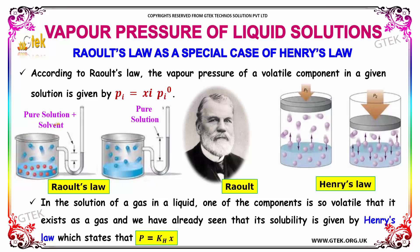You are able to see the pure solution with the solvent. In the solution of a gas in a liquid, one of the compounds is so volatile that it exists as a gas, and we have already seen that its solubility is given by Henry's law, which states that P is equal to KH into X.